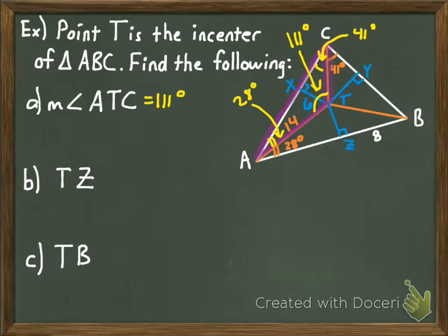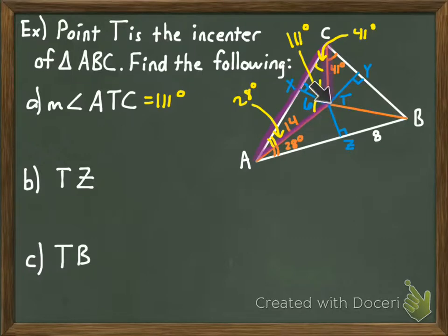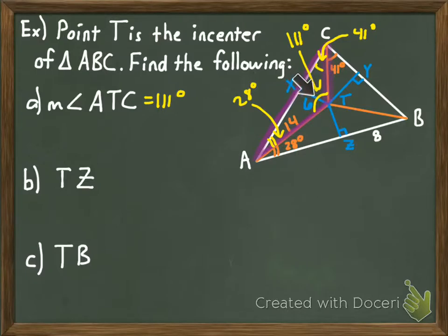The next distance to find is TZ. You can see how TZ is perpendicular to side AB and starts at the incenter — it represents the distance from the incenter to side AB. Since the incenter is equidistant from the three sides of the triangle, and we know how far point T is from side AC, TZ must be the same. We conclude that TZ is also 6 units.